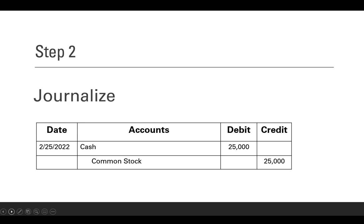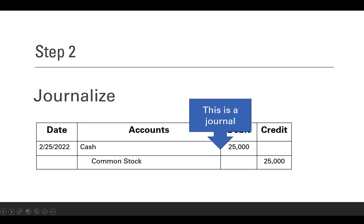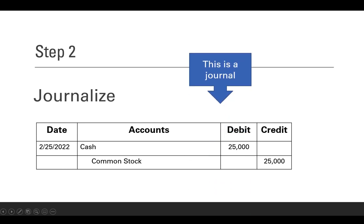Next thing we have to do is journalize. The journal is sometimes called the book of original entry — it means that we're going to write the debit and credit into the books. This is called the journal entry. Notice that it has a date and accounts. The debits always come first; there could be many debits and credits, but all the debits come first, all the credits come second, indented. Debits on the left, credits on the right, just as always.